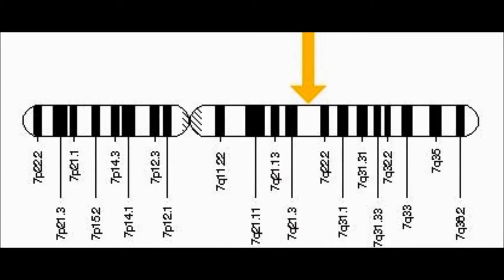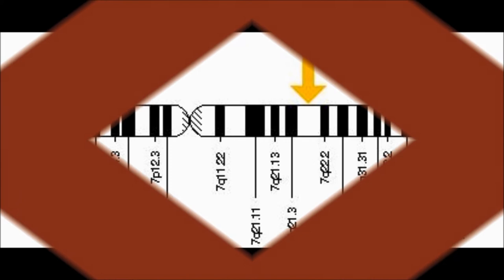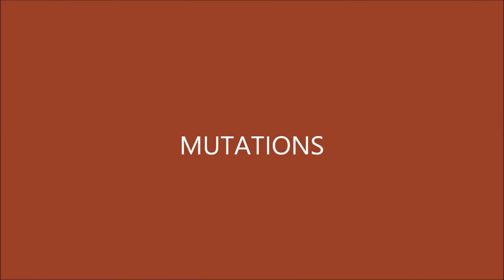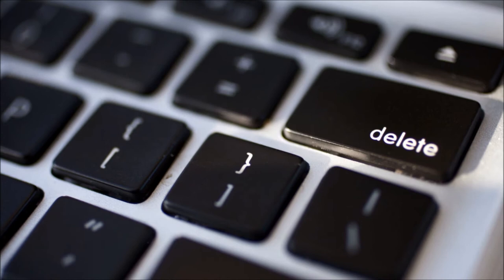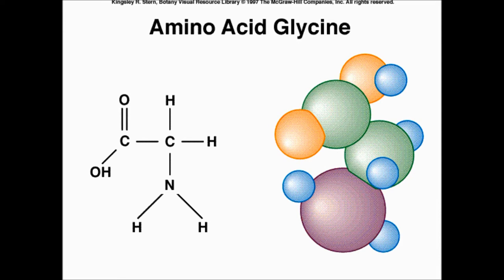COL1A1 and COL1A2 genes give instructions for making type 1 collagen, which is the most abundant form of collagen in the body. Certain mutations to these genes can result in osteogenesis imperfecta. Reduced production rates of pro-A1 and pro-A2 chains is the main reason for fragile bones in OI, because cells can only make half the normal amount of type 1 collagen. Deleted segments of DNA can cause severe forms of OI, resulting in non-functional pro-A1 and pro-A2 chains.